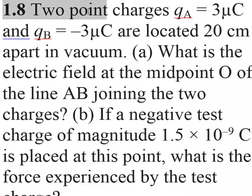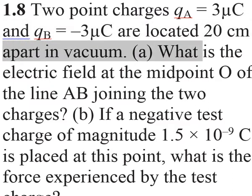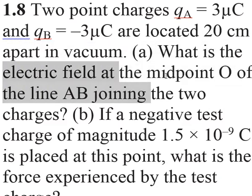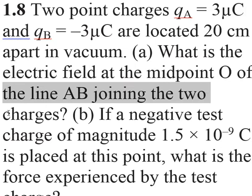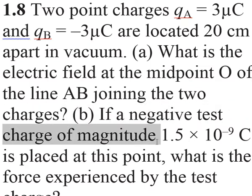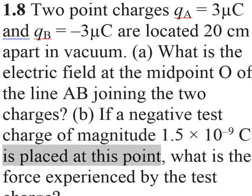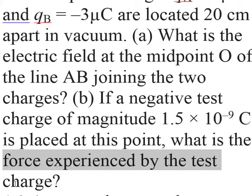Exercise 1.8. Two point charges QA equals 3 µC and QB equals minus 3 µC are located 20 cm apart in vacuum. What is the electric field at the midpoint O of the line AB joining the two charges? Part B: if a negative test charge of magnitude 1.5 into 10 to the power minus 9 Coulomb is placed at this point, what is the force experienced by the test charge?